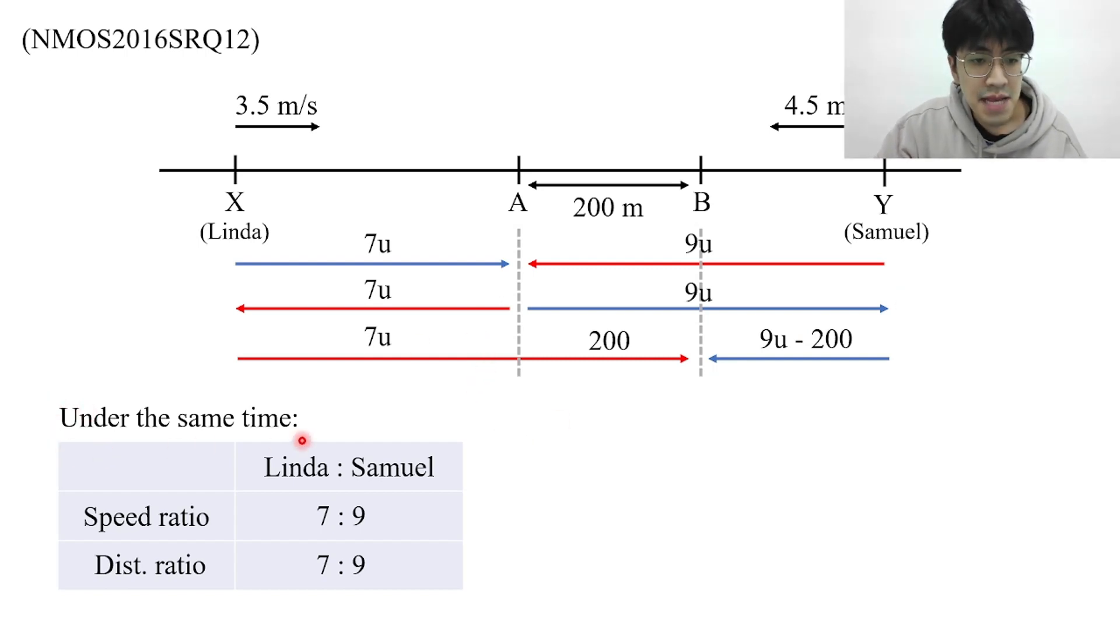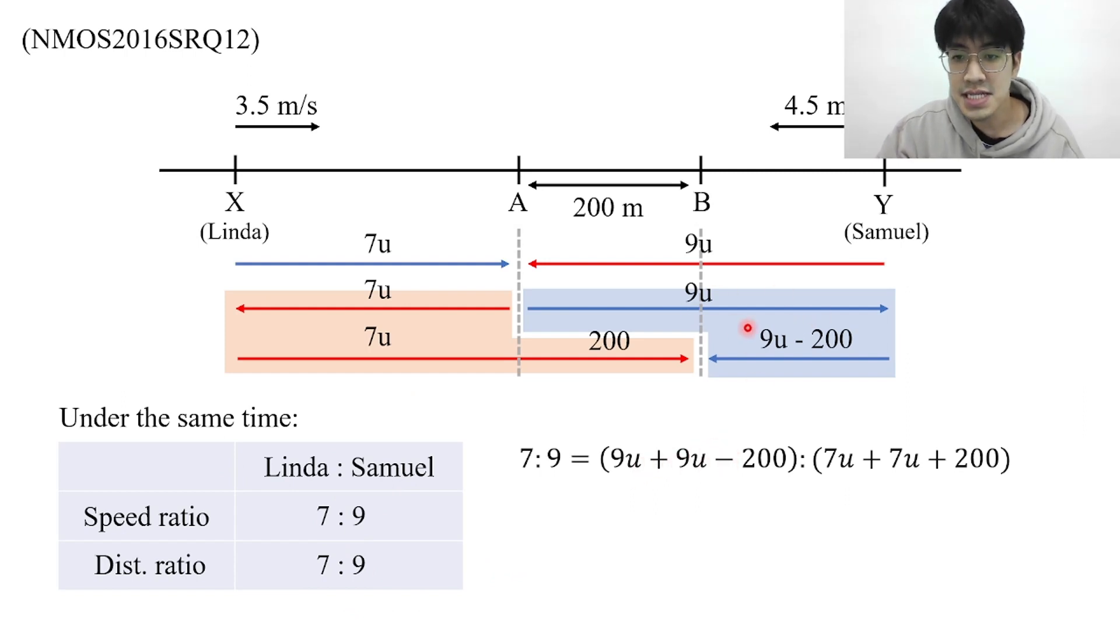We know that under the same amount of time the speed ratio is always equal to the distance ratio. From point A once they meet each other and continue the journey towards point B, this journey to this journey would take the same amount of time. So this entire distance traveled by Linda to this entire distance traveled by Samuel would also be 7 to 9. We can write down that 9u plus 9u minus 200, which is this distance traveled by Linda, to 7u plus 7u plus 200, which is this distance traveled by Samuel, would also be 7 to 9. We can simplify this into 18u minus 200 to 14u plus 200.